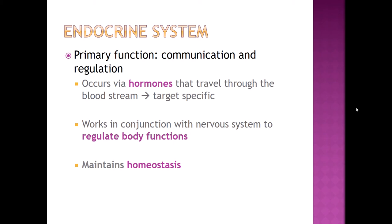The endocrine system can get very confusing to students. There are a lot of different hormones to keep track of, but we're going to go through it and do a couple of activities in lab that should help. The endocrine system is one of our homeostasis systems — the nervous system is as well, particularly the autonomic nervous system.